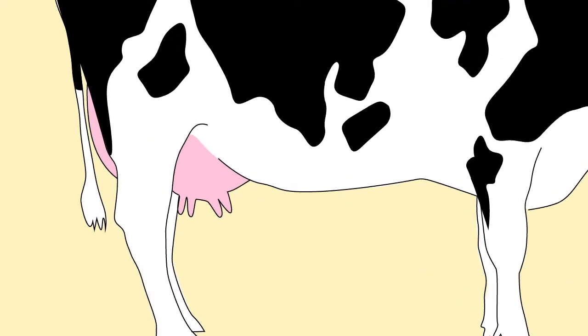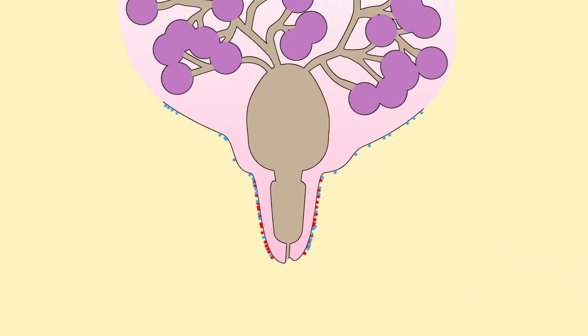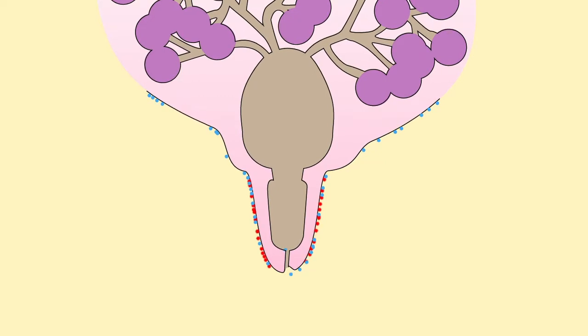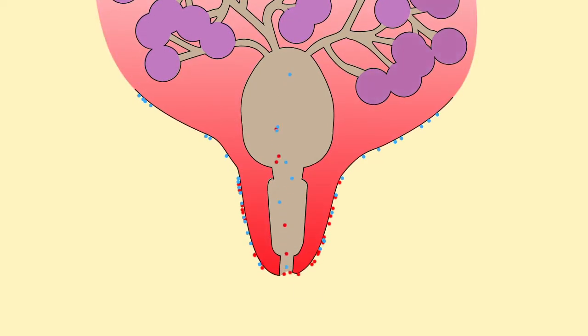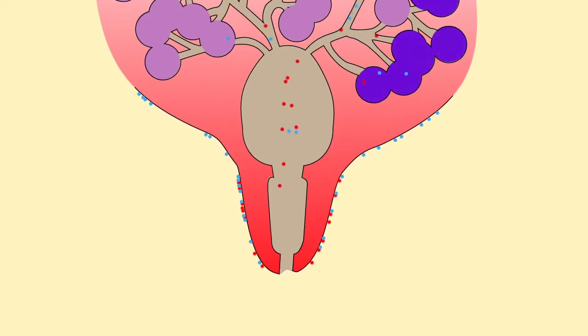Mastitis is the infection of the milk producing gland, the udder. Bacteria invade the tit end via the tit canal and cause an infection. Mastitis is a fight between bacteria invading the udder and the cow fighting the infection.